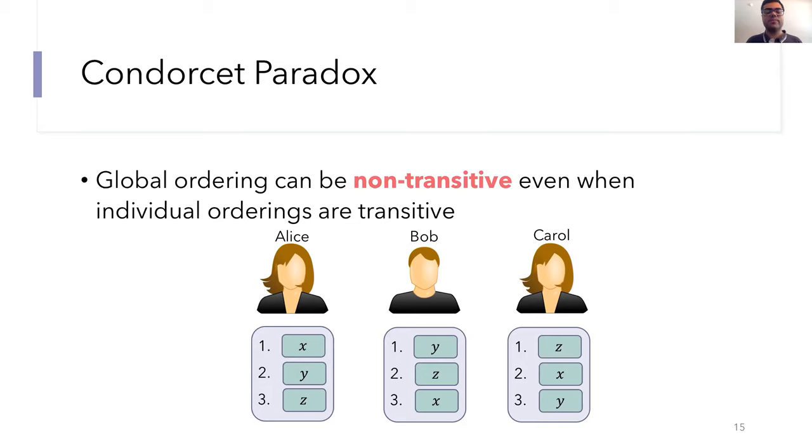In the context of order fairness, let's look at a simple example. Suppose we have three protocol nodes, Alice, Bob, and Carol, and there's three transactions X, Y, and Z input into the system. So Alice receives them in the order X, Y, Z, Bob in the order Y, Z, X, and Carol in the order Z, X, Y.